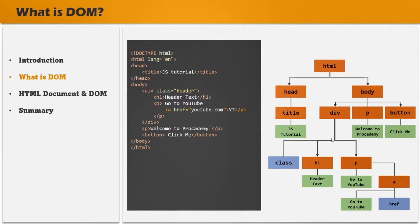Now, the next question is: where are these objects created? Remember that the object for each HTML element gets created in the document object. So whenever an HTML page is loaded in the browser, its document object gets created. And this document object has several built-in methods to access and manipulate HTML elements. It is this document object inside which all other HTML elements are created as objects, as properties of the document object. And remember that the document object represents the web page that is rendered in the browser. And to manipulate that web page and the elements in it, this document object provides us with some methods.